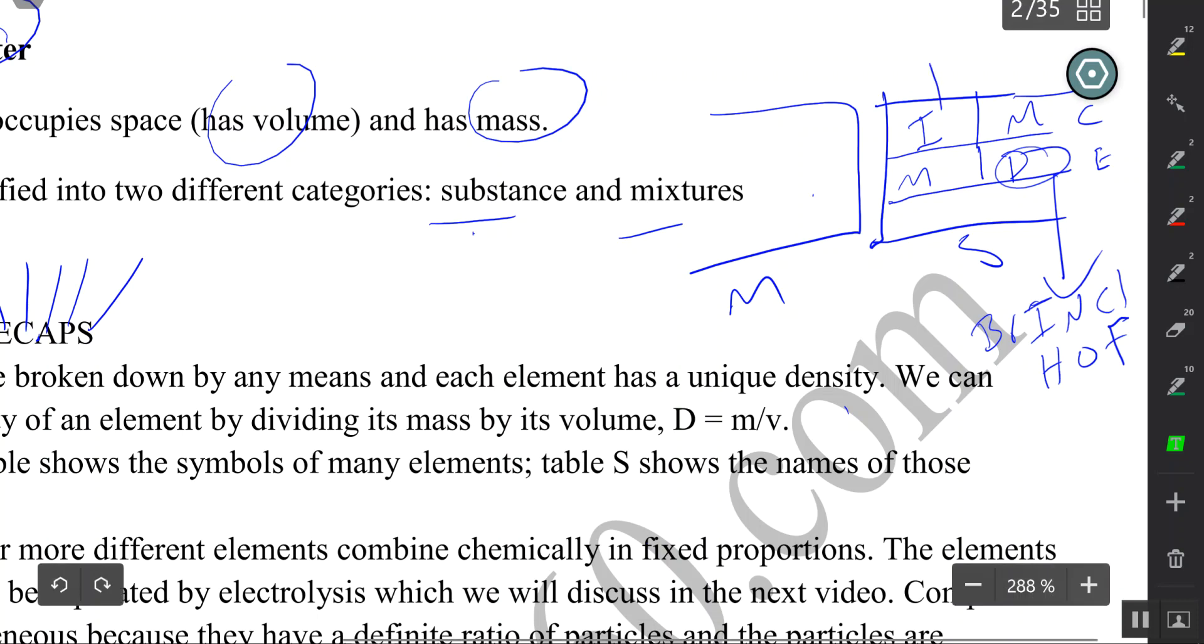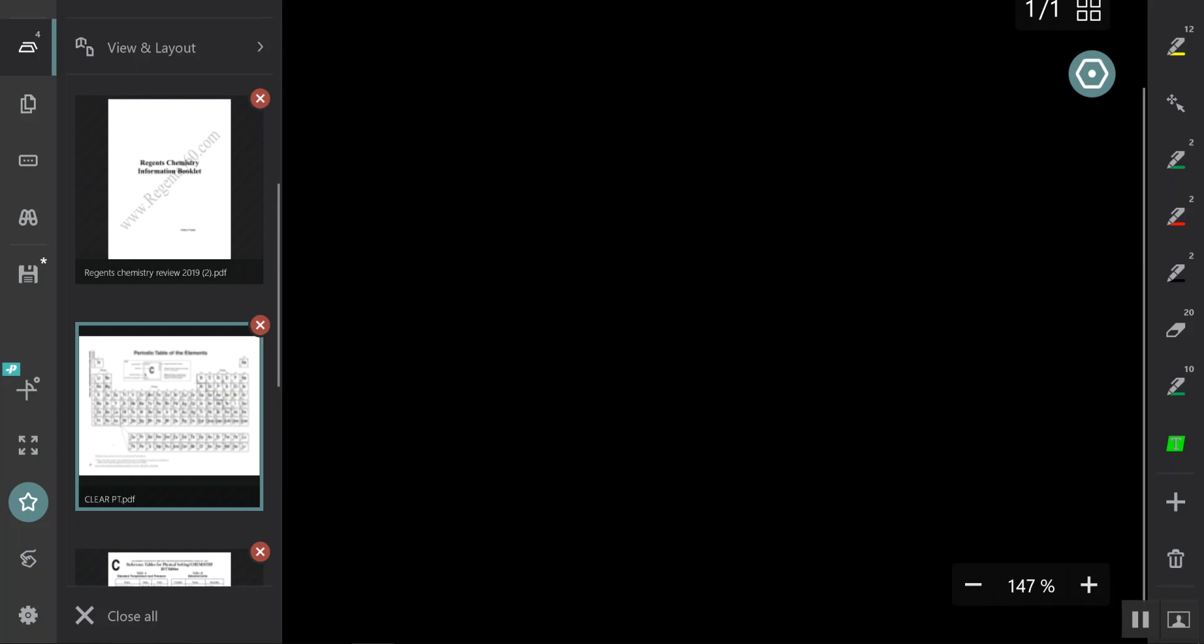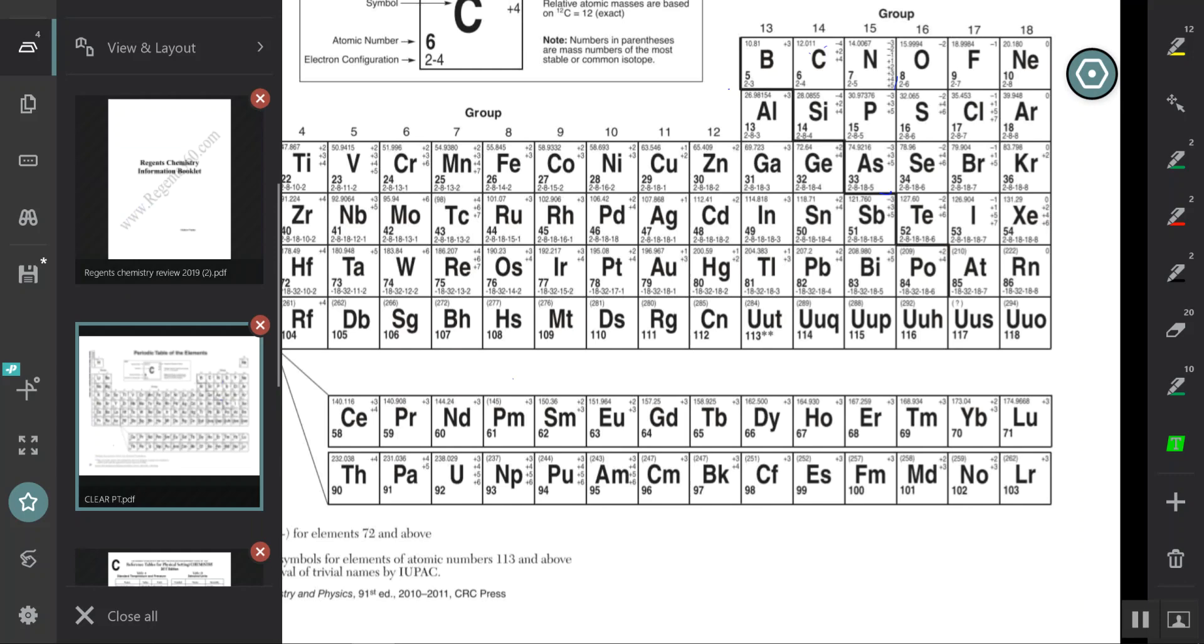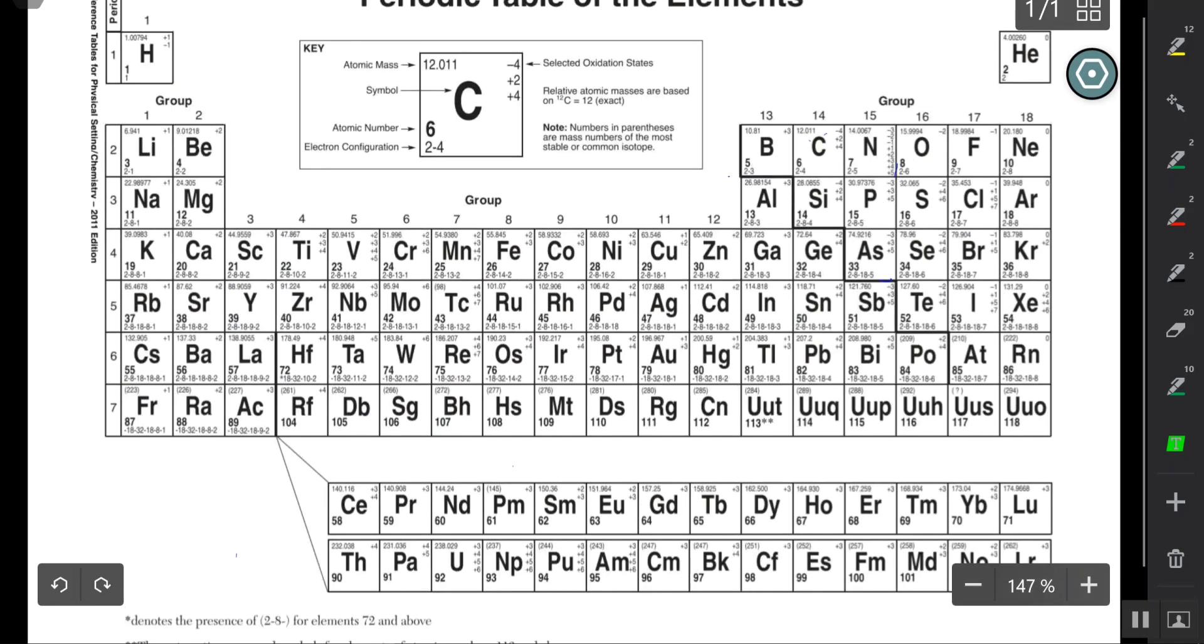Now ionic compounds versus molecular compounds. Here's the periodic table. It contains all the elements you should be familiar with. I'm going to point you out to this staircase here. This is the staircase of the metalloids. Anything above and below metal, except aluminum and polonium, is considered a metalloid.